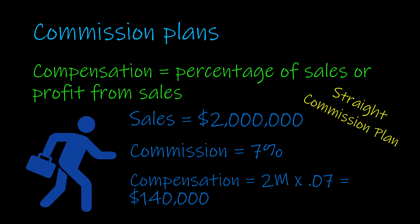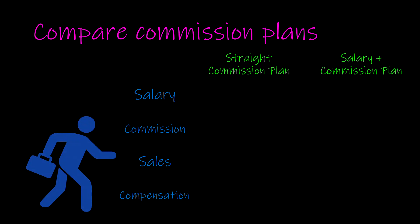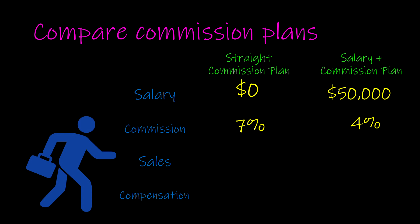This is an example of a straight commission plan because the employee is only paid commission — there's no base salary or any other compensation. We can compare different types of commission plans. We have the straight commission plan and what's called a salary plus commission plan, where the employee gets a base salary and then earns commission for their sales. In a straight commission plan, the salary is $0. In a salary plus commission plan, let's say the base salary is $50,000. The commission rate in the straight commission plan is 7%, but because the salary plus commission plan has a base salary, the commission tends to be lower — we'll say 4% for our example.